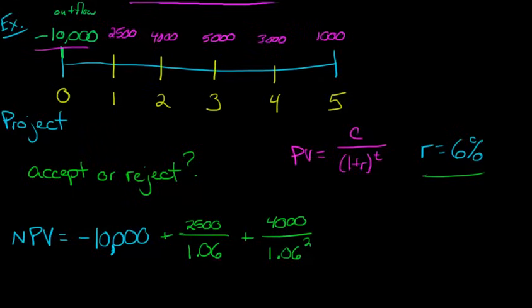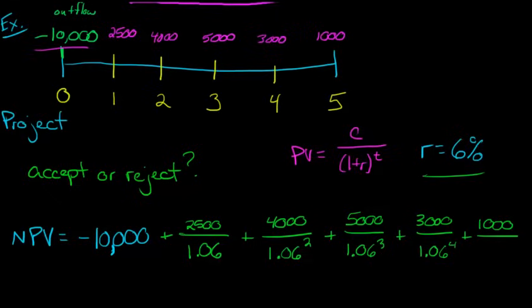Now for the third period, we've got $5,000 in terms of the cash flow. But we're going to have to discount that back three periods. And then we've got, at the end of year four, we get $3,000. And we'll discount that back four periods. And then finally, at the end of the project, we get a cash inflow of $1,000, which will discount back five years.